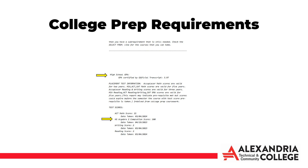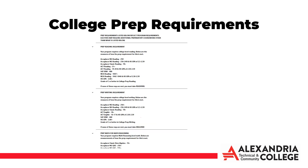you will be exempt from placement exams or prep courses for college algebra level courses. If you have no high school GPA listed or don't meet the GPA requirements, any ACT, SAT, and MCA scores or prior college coursework will be looked at. If you do not meet any of the exemption requirements, you will be asked to take an ACCUPLACER exam for the areas your program has prep requirements for. The prep requirements for your specific program can be found toward the bottom of your audit. These vary from program to program, and the ways to meet the requirements are also listed under each requirement.